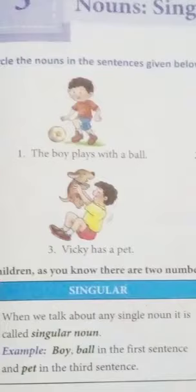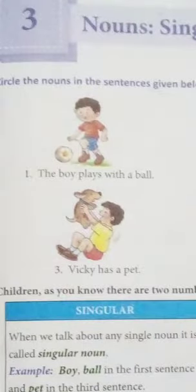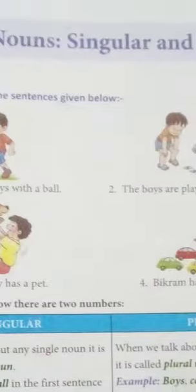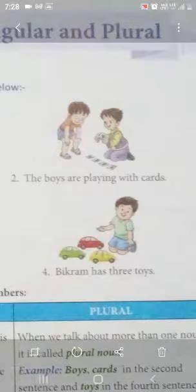In dono me ek difference aap ne dekha. The boy plays with a ball — yahaan one boy, one ball se kheel raha hai. In the second sentence, The boys are playing with cards — is me two boys are playing with many cards. Yahaan one se zyada boys hai. Toh jab singular hota hai noun, toh us ko hum log simple word likhte hai: boy. Jab ye boy plural me change ho jayega, toh hum log s add karte hai — boys, cards. Toh hum ne plural banane ke liye kya kara? We added s to the word.